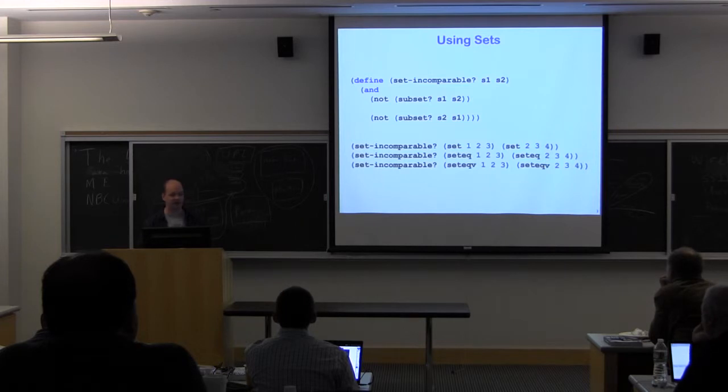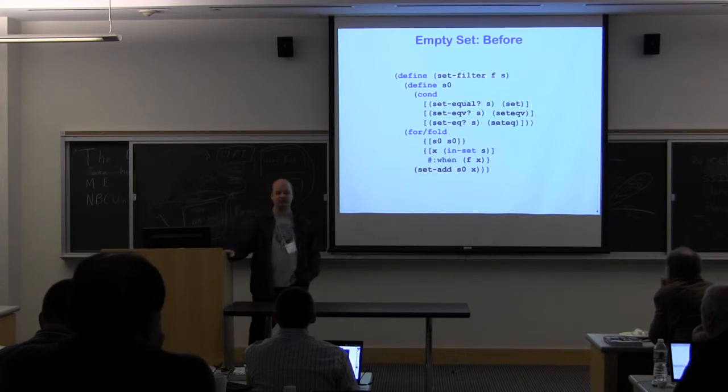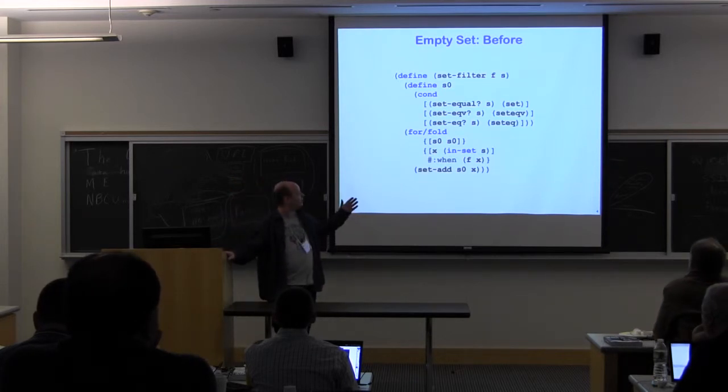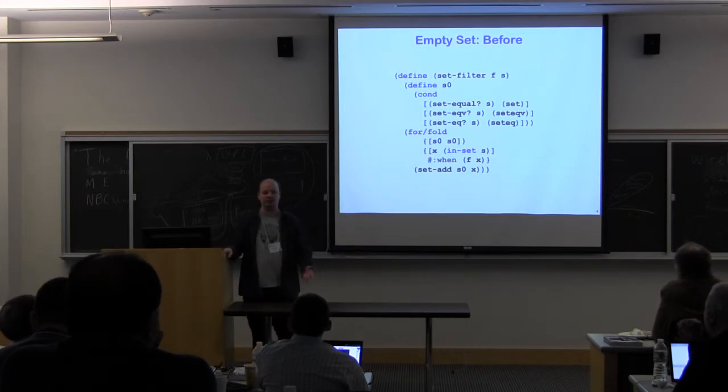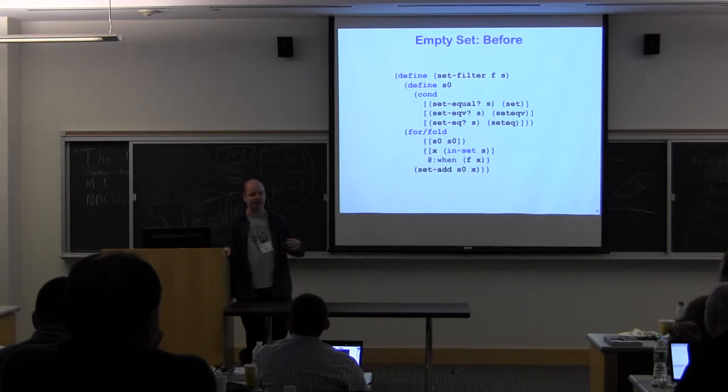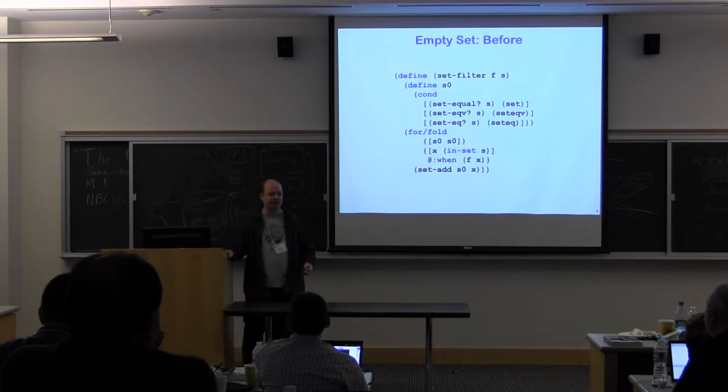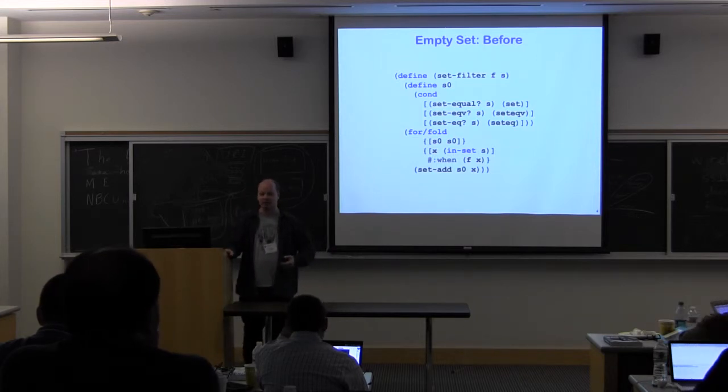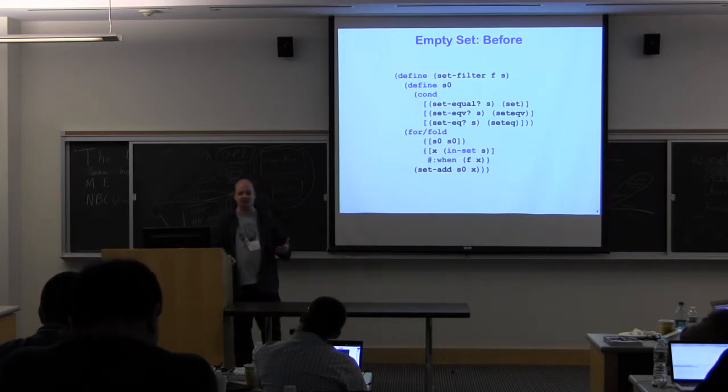But there are some things that it would be nice if we had additionally. For instance, in some cases we want to build a set up from an empty set. If we're doing a set filter and we expect that the result set is going to contain far fewer elements than the original, we might find it does less allocation to start from an empty set and just add the few elements that pass our predicate. But to get our hands on an empty set, we have to know what kind of set we took in and do a manual dispatch to say, was this an EQ set or an EQV set or an equal-based set? And as we make sets generic and allow more kinds of sets, this becomes infeasible.